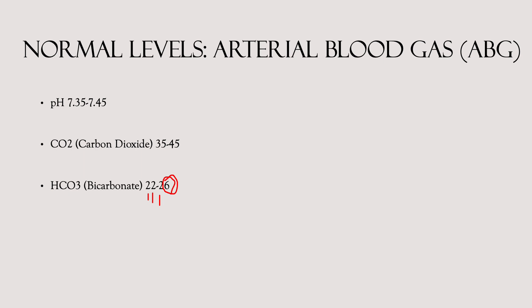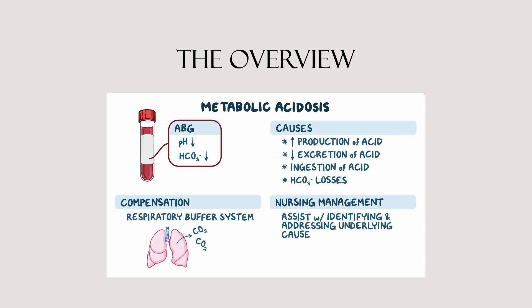With metabolic acidosis we're going to have a lower pH — that makes sense, acidotic properties. HCO3 will also be lower. If HCO3 is too low, the body has to do something to create a balance — it's going to kick off a bunch of CO2.